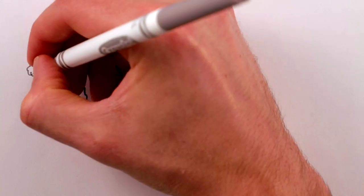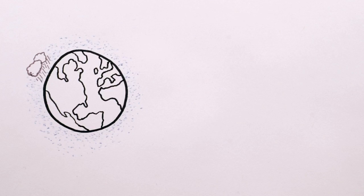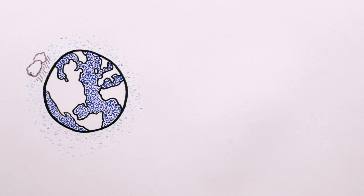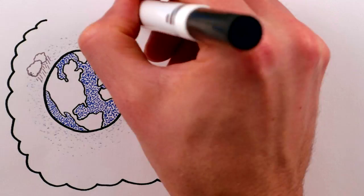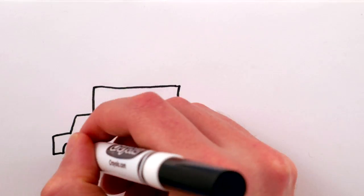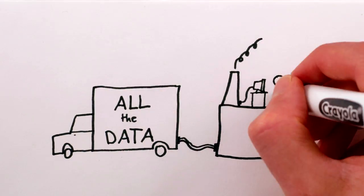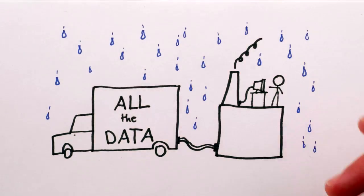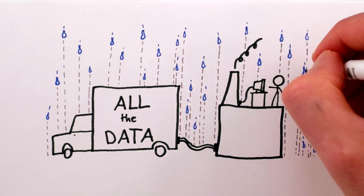But maybe the weatherman just doesn't have good enough knowledge of exactly where all the air and water molecules in the world are, nor a good enough model of how they interact or a fast enough computer to simulate all of their bajillion interactions. Maybe in principle, if he had enough data and a fast enough computer, his weather model could tell you exactly where every raindrop would fall, right?